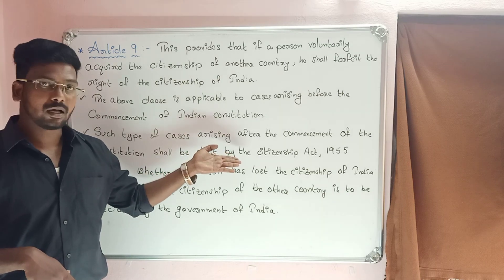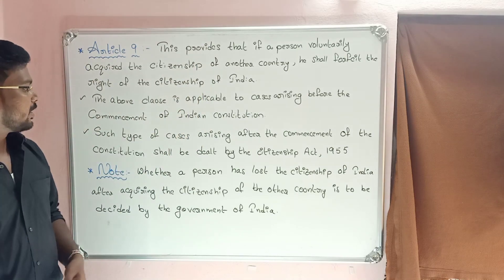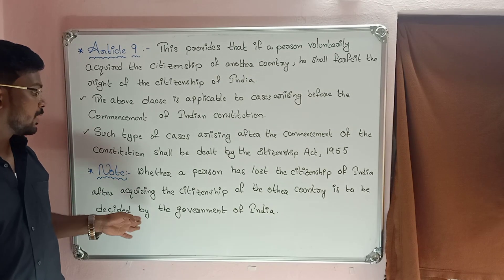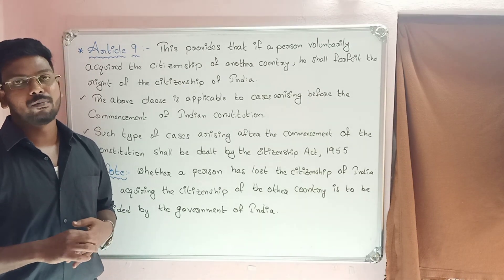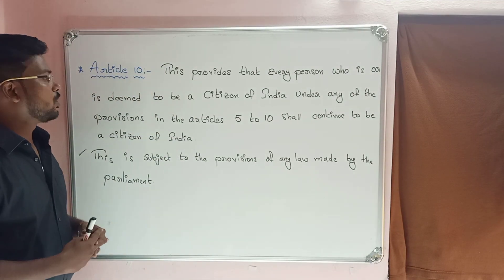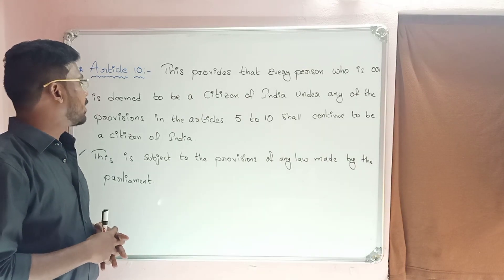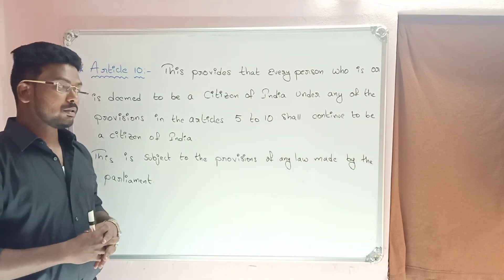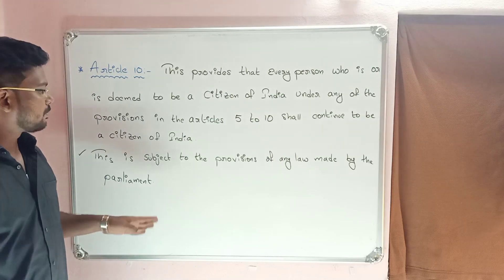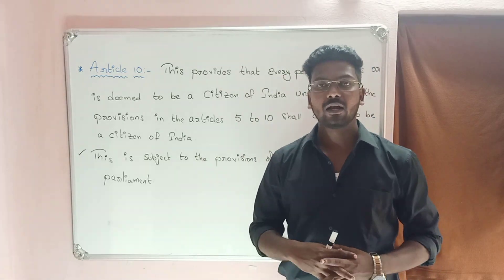After the commencement of the Constitution, under Article 9, whether a person who lost the citizenship of India after acquiring citizenship of another country is to be decided by the Government of India — the ultimate decision rests with the Government of India. Article 10 provides that every person who is, or is deemed to be, a citizen of India under Articles 5 to 10 shall continue to be a citizen of India, subject to the provisions of any law made by Parliament.